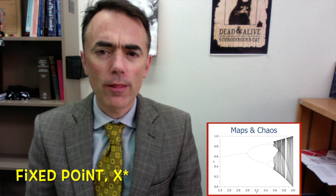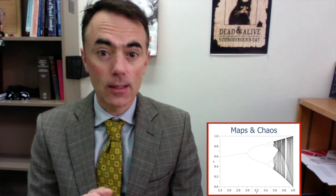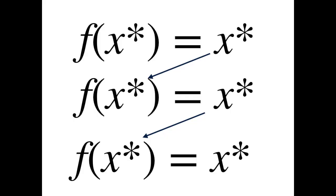It is a point that, once you reach it, you stay there. Once you reach it, you have that f of x star is equal to x star. From then on, you'll only get x star.